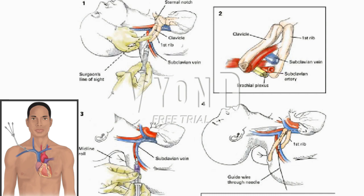Figures 1 and 2 show the relevant anatomy of the subclavian vein. It may be cannulated on the right or the left side. On the right, the subclavian vein courses behind the medial third of the clavicle and joins the internal jugular vein to drain into the superior vena cava. It lies anterior and inferior to the subclavian artery. The dome of the right lung lies behind the vessels.